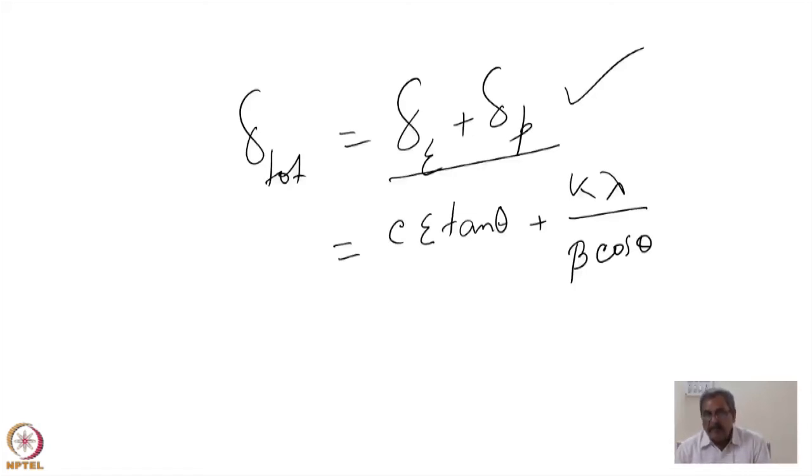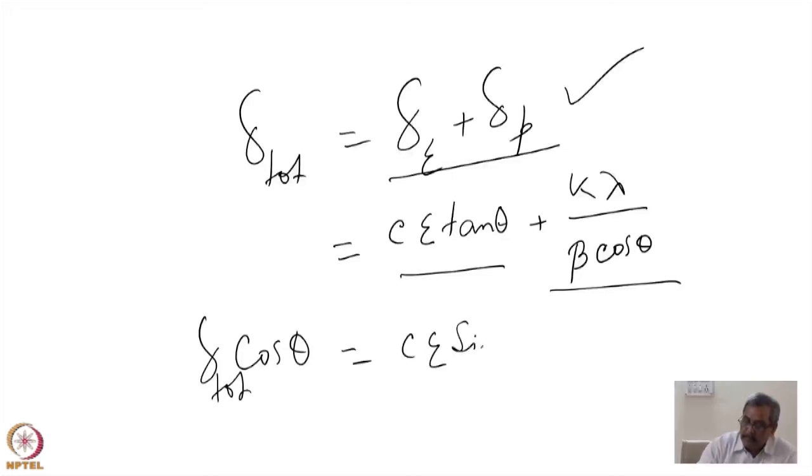If it is not true, then I cannot use this formula, but I go with the assumption that the microstrain and the particle size they do not interfere, and the total broadening is given by the broadening due to strain and the broadening due to particle size. So then δ_total, if I multiply by cos θ, it comes to C ε sin θ + K λ / β.